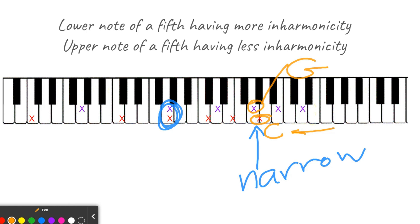That's how the visual works. So if I tune it pure at the first coincident partial, and it measures narrow at the second coincident partial, it means my lower note has more inharmonicity, and my upper note has less inharmonicity. If I were to tune it pure at the second coincident partial, this same situation would cause it to measure wide at the first coincident partial.